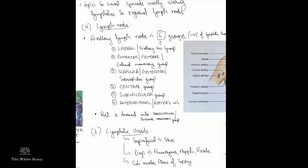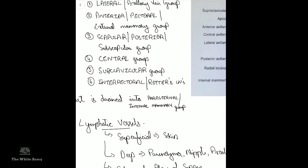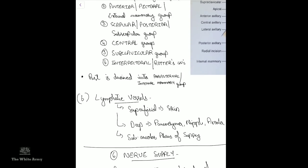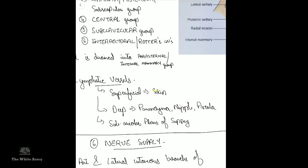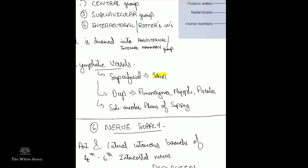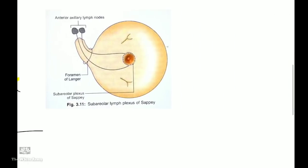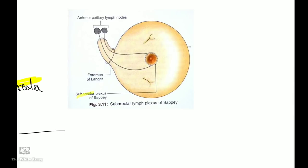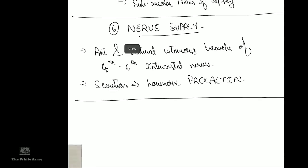About 75% of breast lymphatic drainage goes to the axillary lymph nodes, while the rest drains into the parasternal or internal mammary group. Regarding lymphatic vessels, superficial lymphatic vessels drain the skin except the nipple and areola; deep lymphatic vessels drain the parenchyma, nipple, and areola. There is a subareolar plexus of Sappey, and most drainage from here goes into the anterior axillary group of lymph nodes.